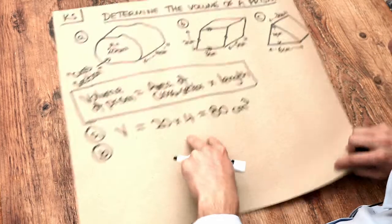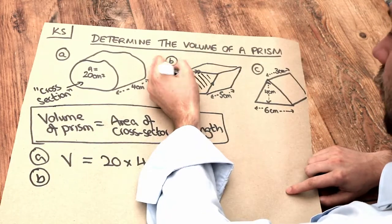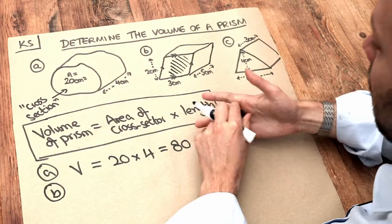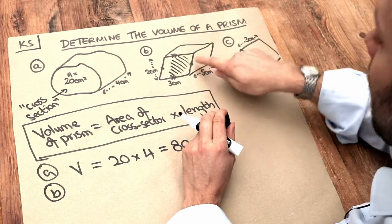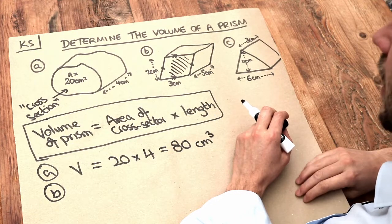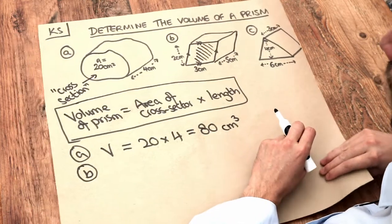Now B, this is a bit harder. We've got this cross section at the front here, and wherever we chop that 3D solid we see that same shape here. And that is a parallelogram. Now what is the area of the parallelogram?